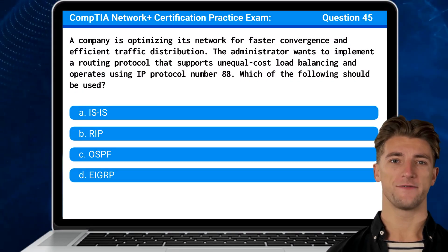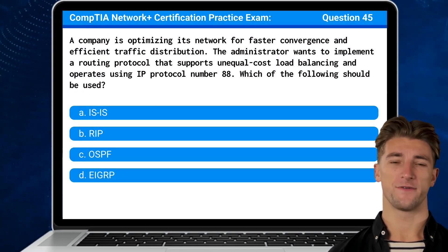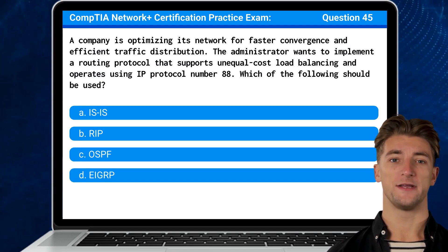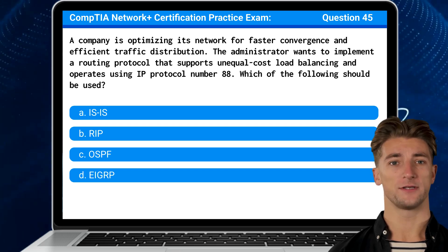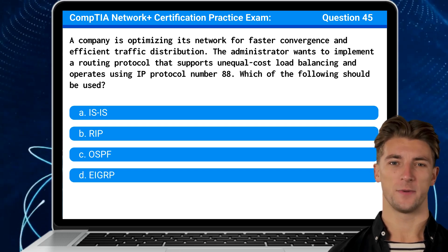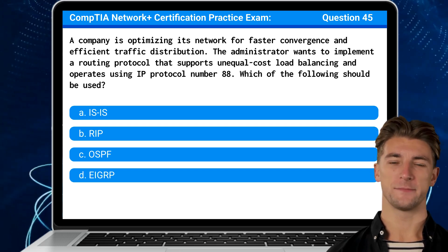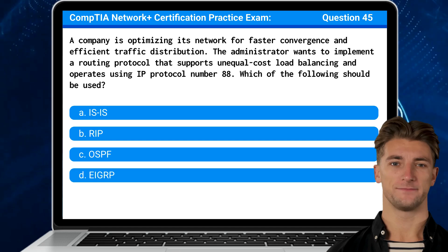Question 45: A company is optimizing its network for faster convergence and efficient traffic distribution. The administrator wants to implement a routing protocol that supports unequal cost load balancing and operates using IP protocol number 88. Which of the following should be used?